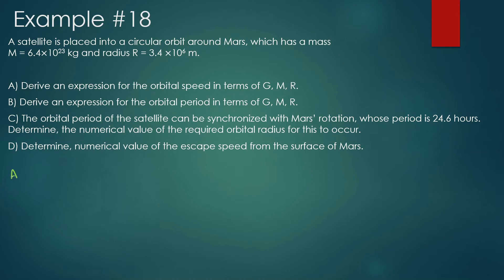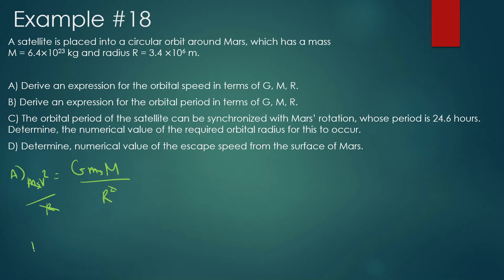So for Part A: force of gravity equals G times the mass of a satellite times mass of Mars (capital M) divided by R squared. We change this to the centripetal force: mass of the satellite times v squared divided by R. The mass of the satellite cancels out, one of the R's cancels, and we can derive the expression: v equals the square root of G·M over R. Hopefully you can do that very quickly now.